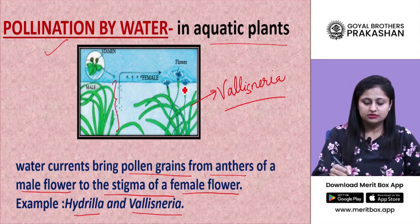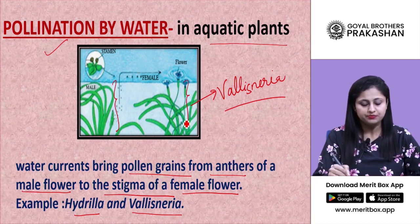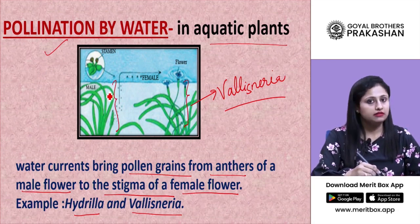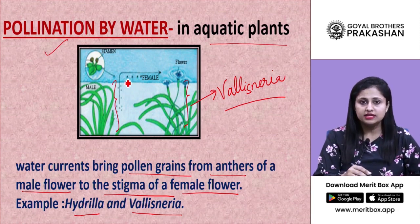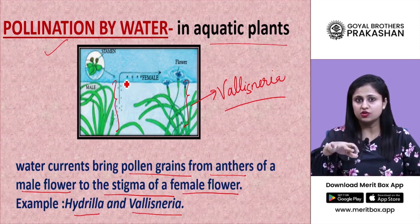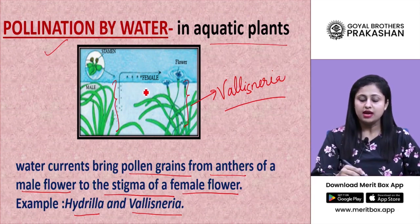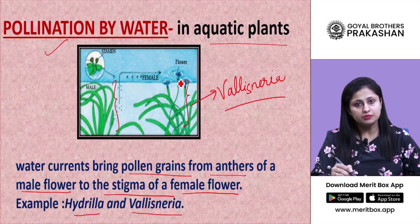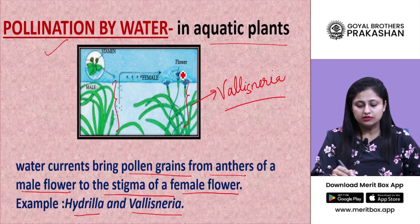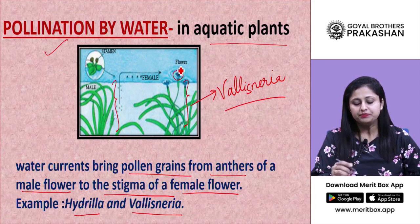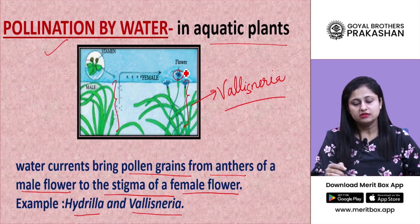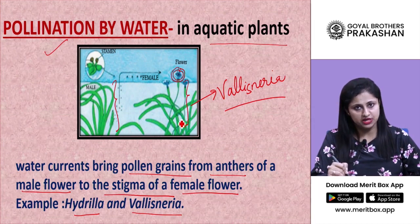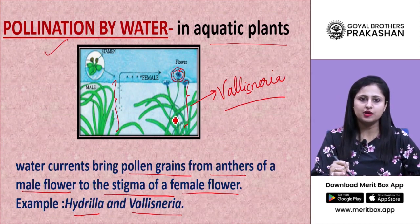In vallisneria, the male plant releases pollen grains at the time of maturity. Those pollen grains remain floating on the surface of water currents and when they attain maturity, they approach the female plant. The pollen grains approach the stigma of the female plant's flower and the process of pollination occurs.